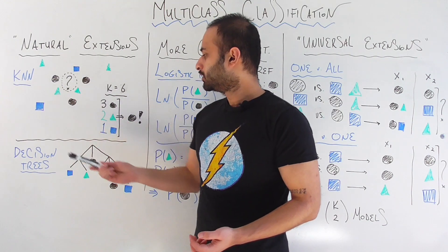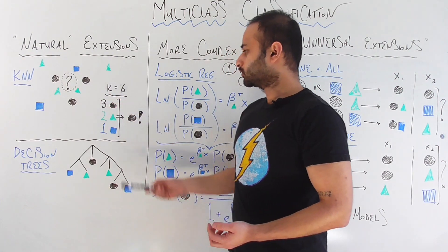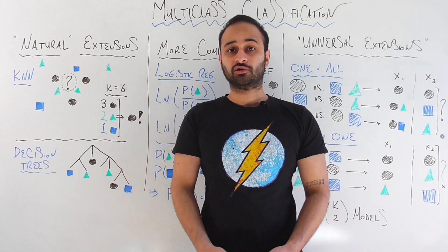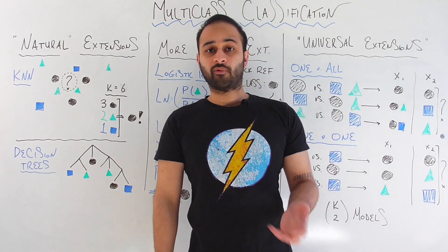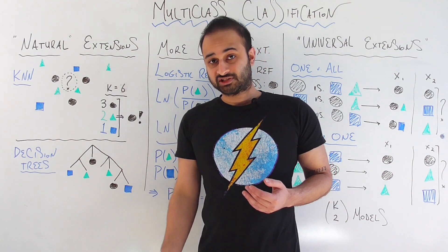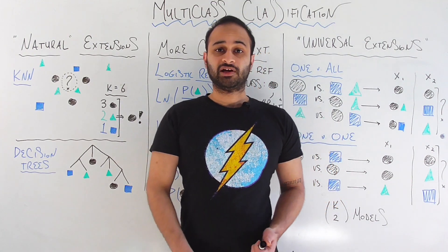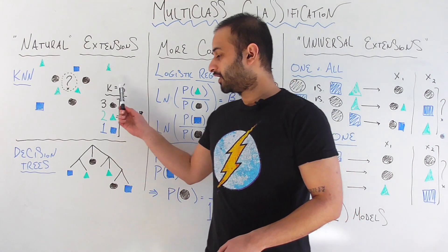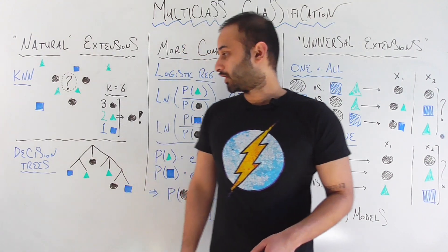We look at the six closest neighbors — it's going to be three circles, two triangles, and one square. So looking at this simple tabulation, the majority of my six neighbors are circles, and I'm going to predict the point to be a circle as well. We can even go one step further and assign probabilities: probability of circle is 3/6 or 50%, probability of triangle is 2/6 or 33%, and probability of square is 1/6 or roughly 17%. Pretty simple extension.